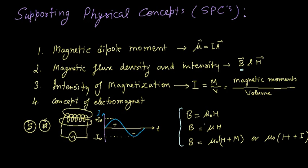An important concept is the difference between the relationships B = μ₀H, B = μ₀μᵣH, and B = μH. The relationship B = μ₀H is linear, while B = μH depends on the permeability of the material. Here μ₀ is the permeability of free space and μ is the permeability of any medium, so the ratio B/H defines the value of μ.